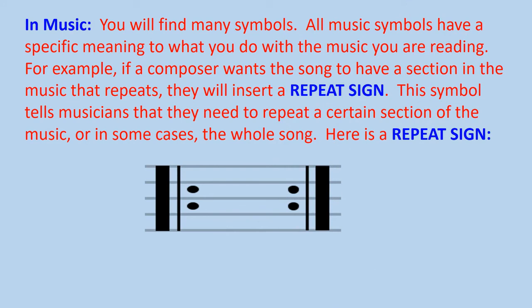You will find many symbols in music, obviously. All music symbols have a specific meaning to what you do with the music you are reading. For example, if a composer wants the song to have a section in the music that repeats, they will insert a repeat sign. This symbol tells musicians that they need to repeat a certain section of the music or, in some cases, the whole song. Here is a repeat sign, and that is the symbol you see in front of you. It is two dots on each end and they circle the third line. They're right in the middle. So two dots flanking each side of the third line.